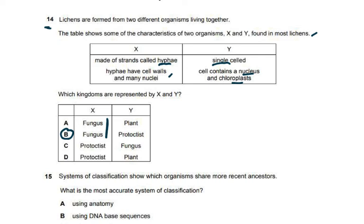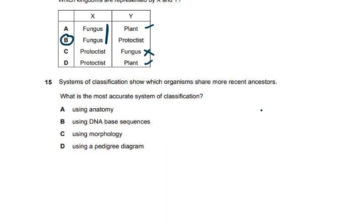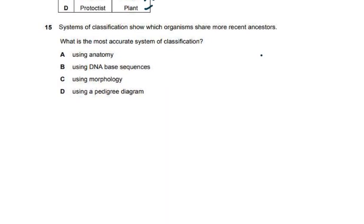For question fourteen: chloroplasts are not present in fungi — they are present in plants, but plants are multicellular. A single-celled organism with a nucleus and chloroplast must be a protoctist. Question fifteen asks which system of classification best shows which organisms share more recent ancestors. Using DNA-based sequences is the most accurate system, as it shows how closely related organisms are. This will be studied further later in the chapter.